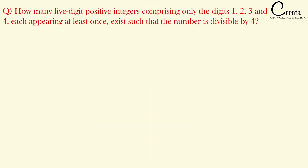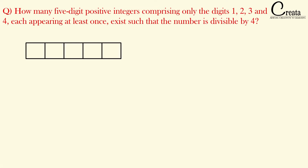Let's approach this question. We need to form a 5-digit positive integer using the digits 1, 2, 3, and 4. We have 5 slots for the 5-digit number. Each digit must appear at least once. Since we have 4 digits and 5 slots, one digit will be repeating. The additional condition is that the number must be divisible by 4.